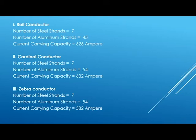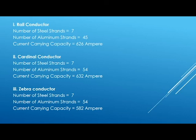Here we can observe that although the number of steel strands in Cardinal conductor and Zebra conductor is the same, there is a considerable difference between their current carrying capacities. This is because current carrying capacity not only depends on the number of strands but also on the diameter of the strand. The diameter of the strands in Cardinal conductor is higher compared to Zebra conductor, which is why Cardinal has a higher current carrying capacity.